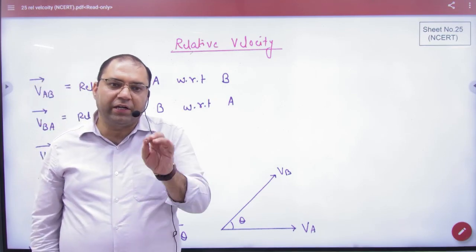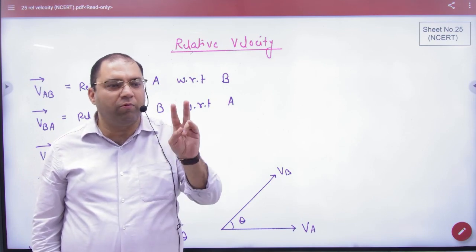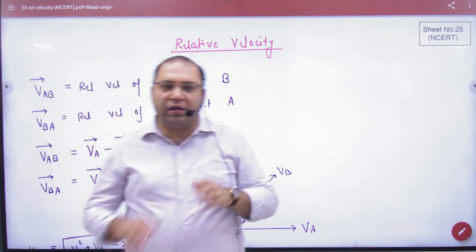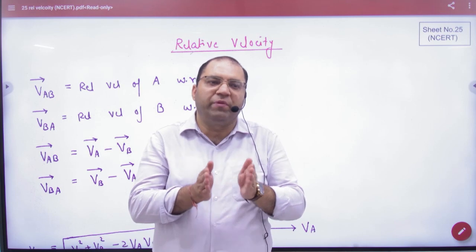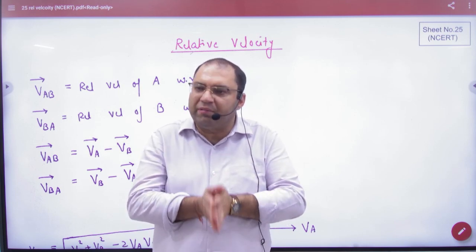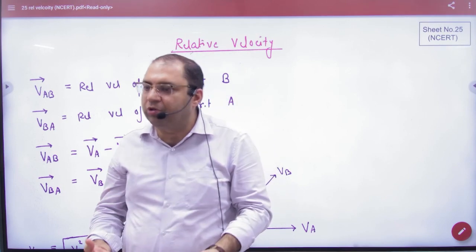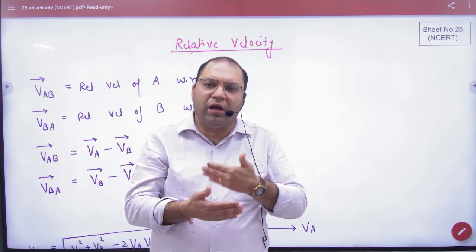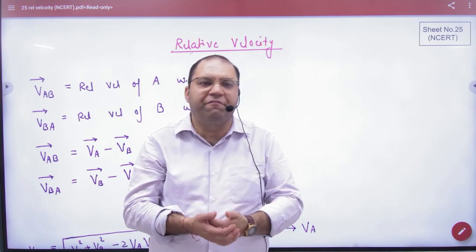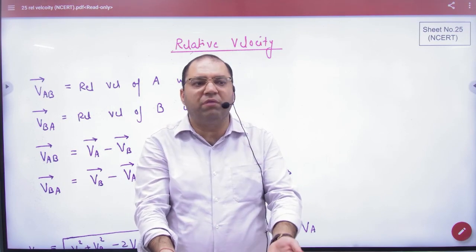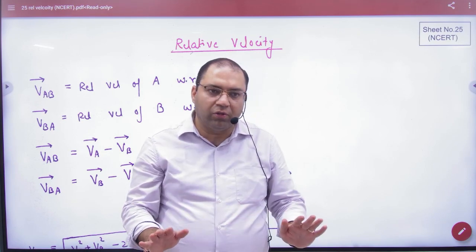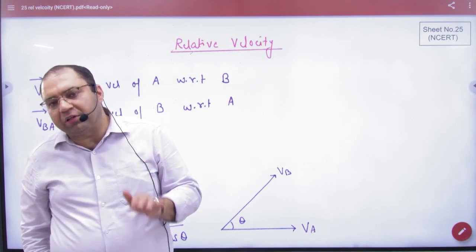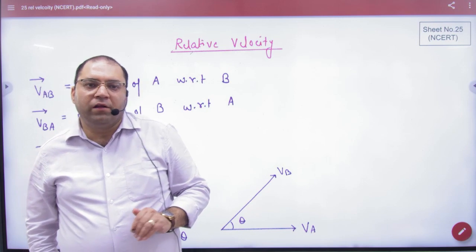In the same way, relative velocity means there will be two bodies. Say there is a car and its velocity is 60 km per hour. 60 km per hour — which velocity is this? It is called absolute velocity. It is absolute; there is no comparison. Newton said that if you have to do comparison, by default we will do comparison with the ground, because we think the ground is at rest. So if I say a car's velocity is 60 km per hour, that means that velocity with respect to ground.